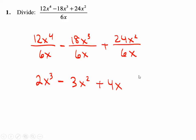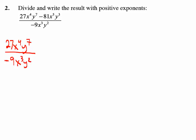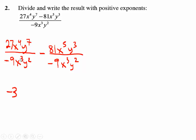Making things a little more complicated is the concept of multiple variables or multiple bases. The negative 9x cubed y squared has to go under each of the terms above. Simplifying them individually: negative 9 goes into 27 negative 3 times. x to the 4th divided by x cubed leaves another x on top. y to the 7th divided by y squared — the difference is 5, so it would be y to the 5th.